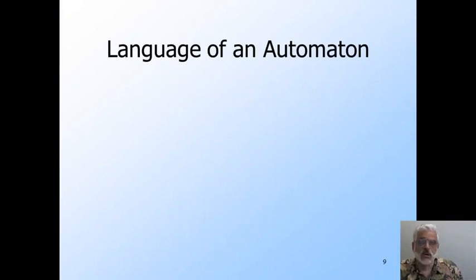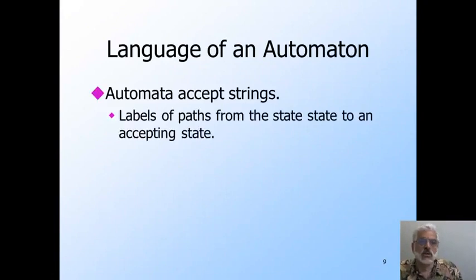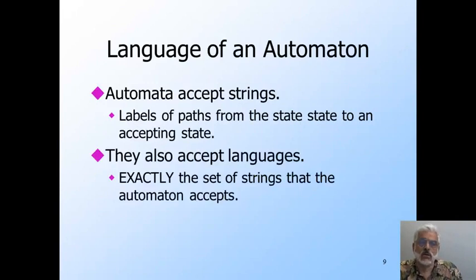Here's another point that has caused some confusion. Automata accepts strings, the labels of the paths that lead from the start state to an accepting state. But we also said that an automaton accepts a language. This language is the set of strings that the automaton accepts. If we say automaton A accepts language L, then we mean that L consists of all and only the strings that A accepts.